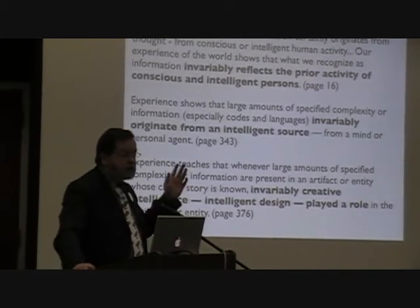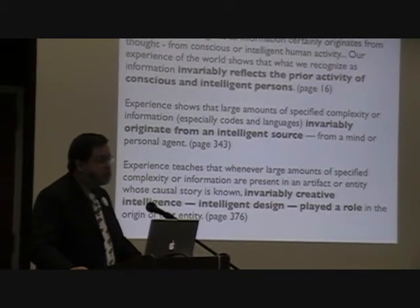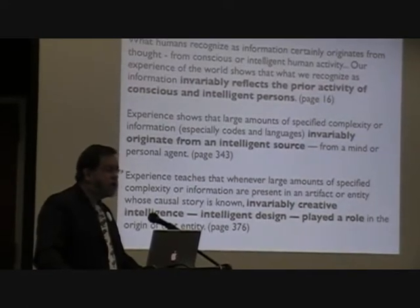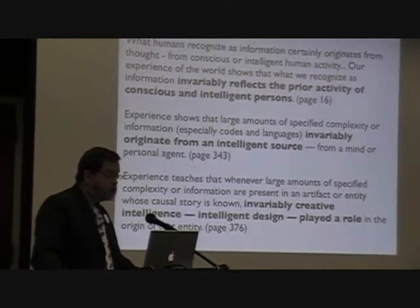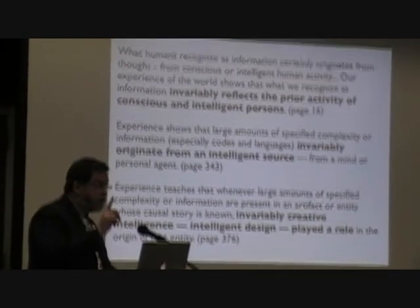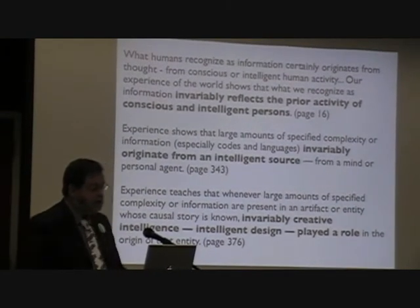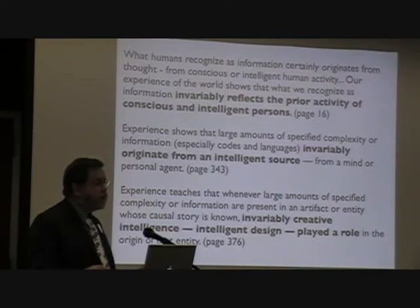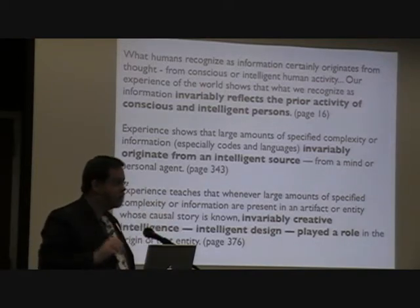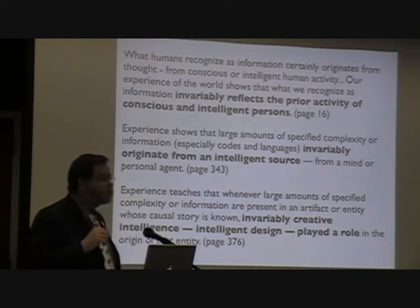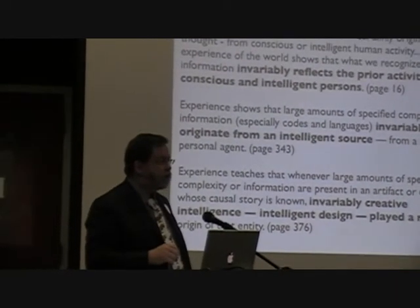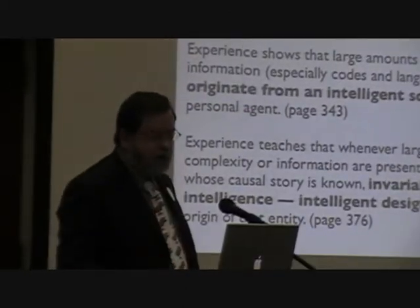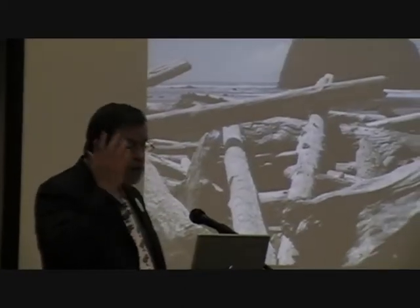But here is the premise: the only way you can get complexity, the only way you can get information — particularly what he calls specified information, and I promise I will return to that word 'specified' — the only way you can get specified information is if somebody sits down with a brain and designs it. And it's not true. There are lots of ways to get complexity, and we see complexity all over nature. Here's one example.